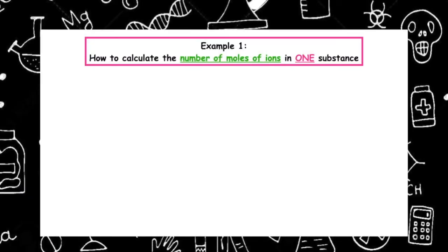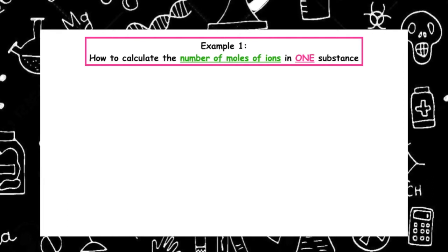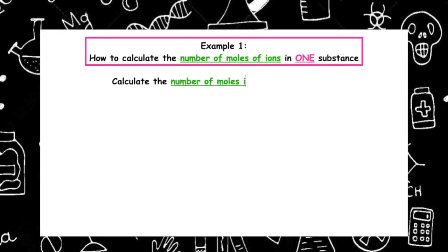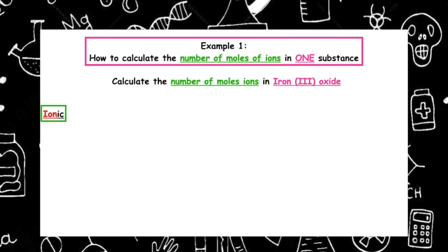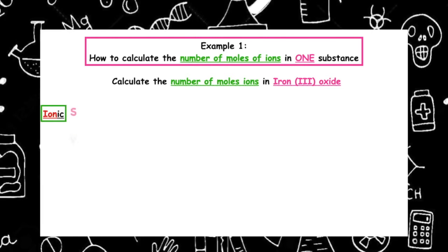Example 1: we are going to learn how to calculate the number of moles of ions in one substance. The stem of the question looks like: calculate the number of moles of ions in iron(III) oxide. We've been given the name of the substance, so we have to work out the formula. Because it wants us to calculate the number of moles of ions, we want to write out the ionic formula.